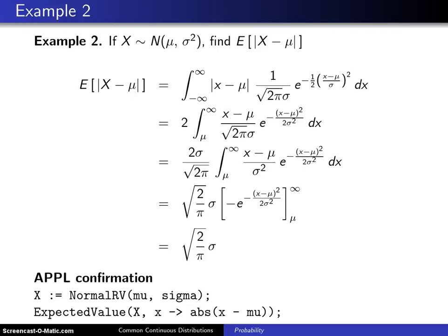Here is a second example that concerns the normal distribution. If x is normally distributed with parameters mu and sigma squared, find the expected value of the absolute value of x minus mu.